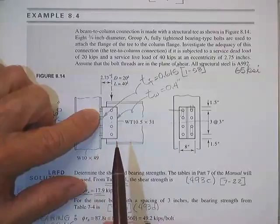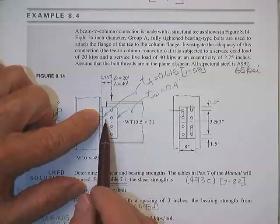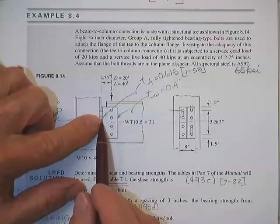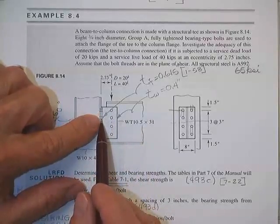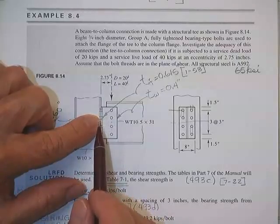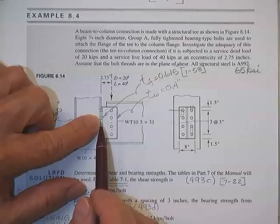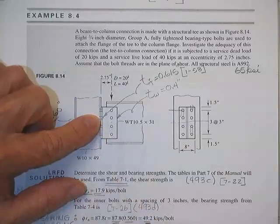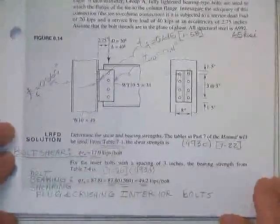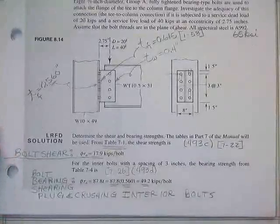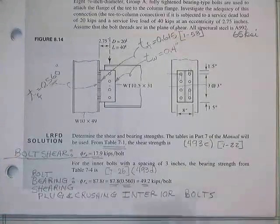We used the interaction equation first. You found out how much shear you used up, which was originally available to you. And if you hadn't used it all up, then you probably had some tension coming to you, which you would find using the interaction equation. So going through one of those, not much reason to worry too much about the bearing and things like that.